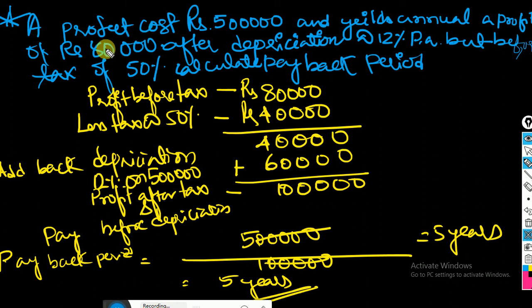Here is a project cost of the asset is 5 lakhs. The project cost is 5 lakhs, and the annual profit of the asset is 50,000 after depreciation at the rate of 20% per annum but before tax. And tax of 50%, calculate the value.